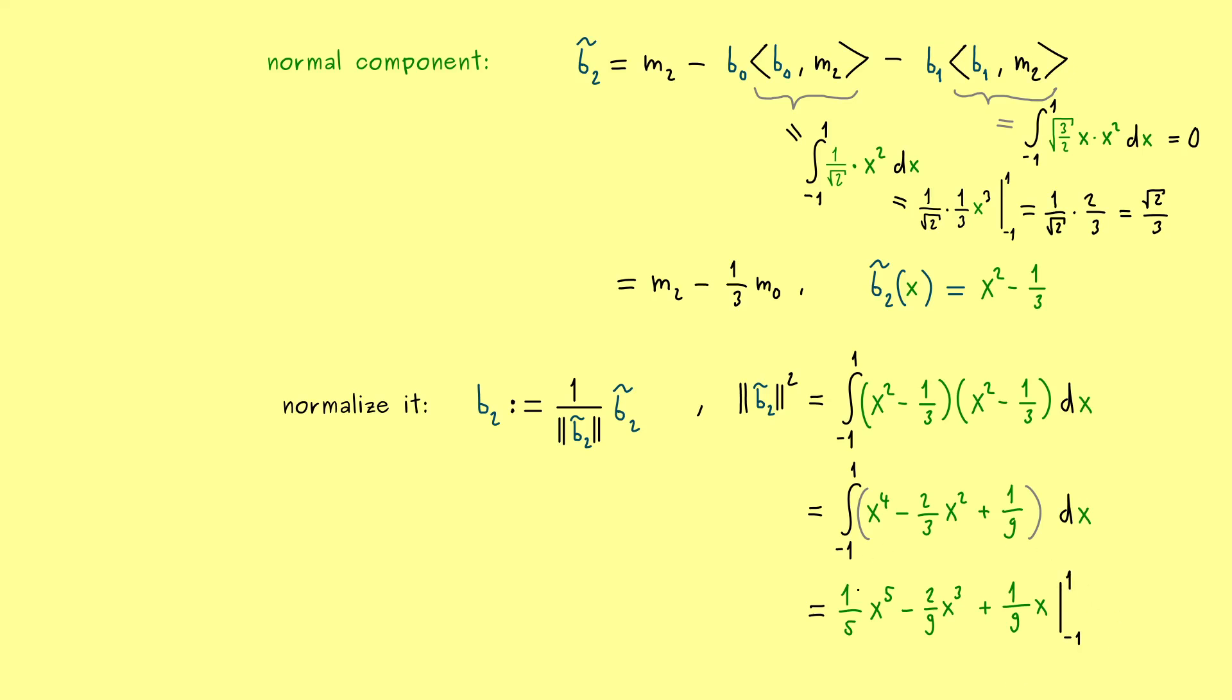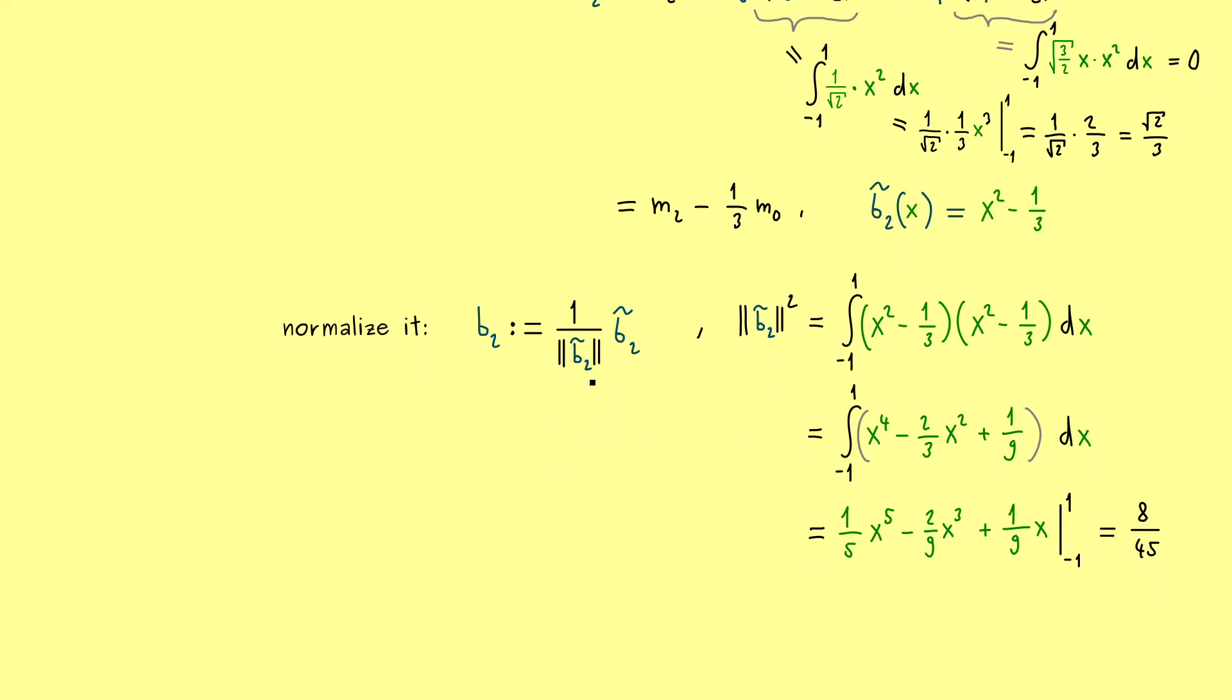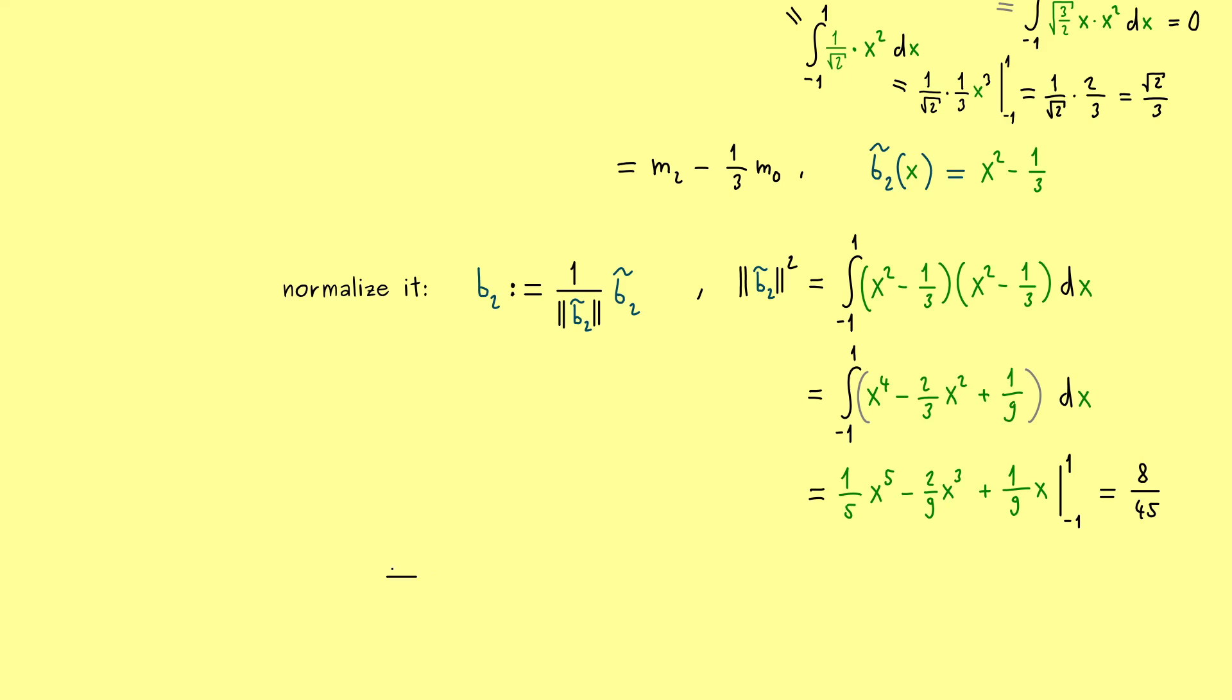But then we have the result. So maybe very quickly, we have x to the power 5 here. We have x to the power 3 here. And then just x at the end. And finally we put in the boundary points minus 1 and 1. And now just put everything together. And then we see, we get 8 divided by 45. But with that we have our result. We take the square root of that and put it in the denominator here. And then we finally have our b2. It's still the nice function x squared minus 1 third. But now with this factor in front. And with that we are done.